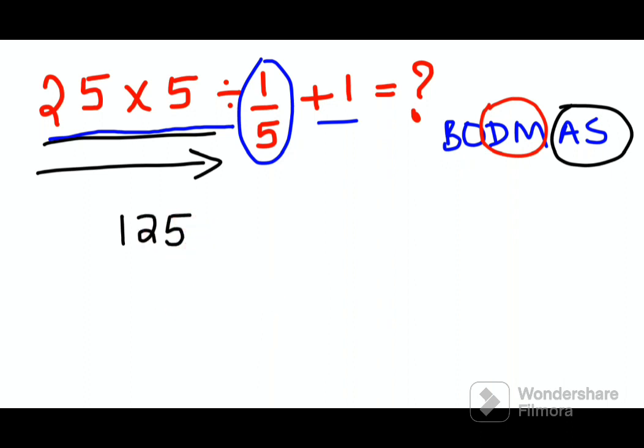Now there is a division sign and a fraction. So let's convert this division sign into a multiplication sign, and when you do this, this particular fraction gets reversed since you have changed the sign of division into multiplication.